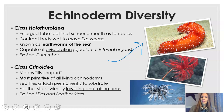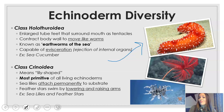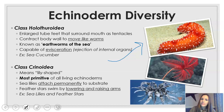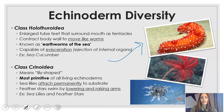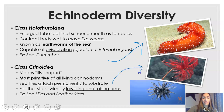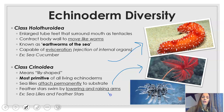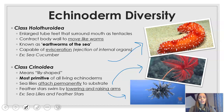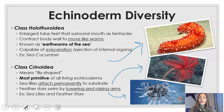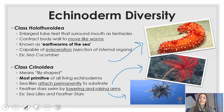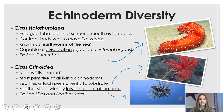Our final class is class Crinoidea, meaning lily-shaped. These are actually the most primitive or oldest of all echinoderms, and they have two major types. First, there are sea lilies, which attach permanently to the substrate where they live. Then there are feather stars, which at first glance probably look like a Photoshop job, but these are legitimate organisms — they look like feathers but are actually related to sea stars.